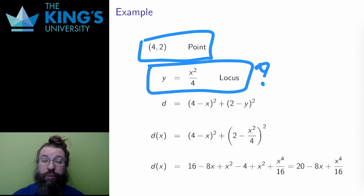However, (4,2) is not on the parabola, so there should be one, or perhaps more, closest points.